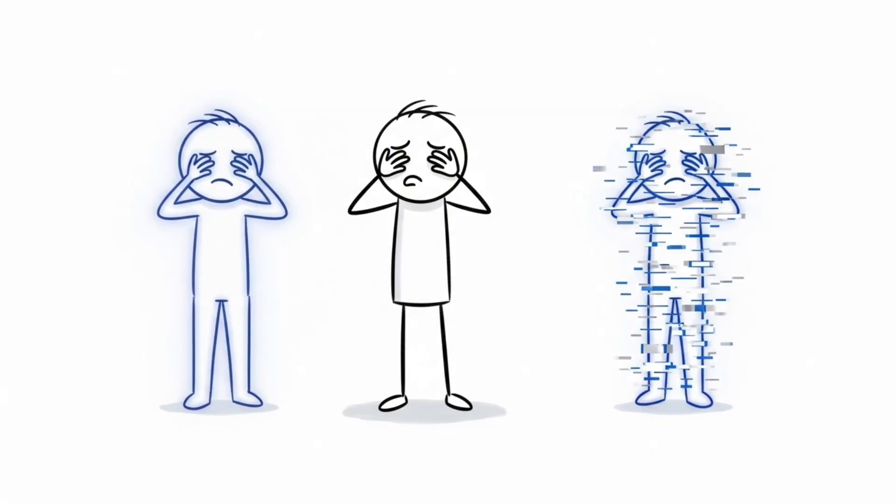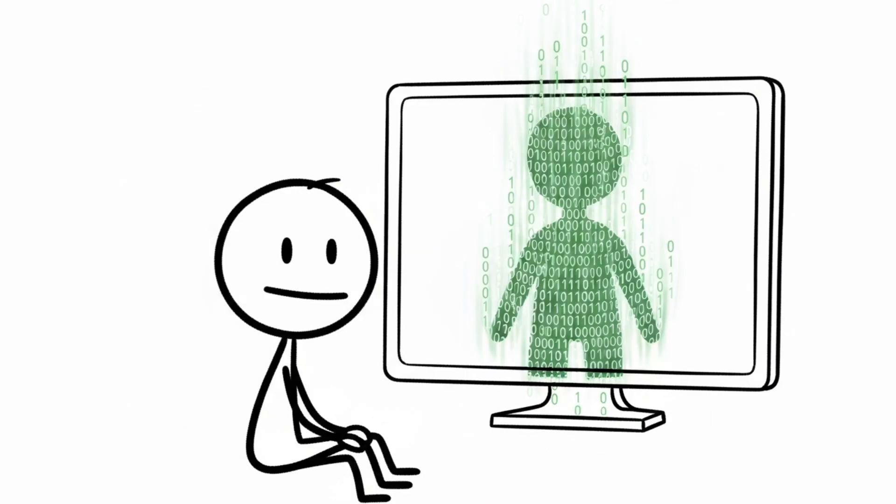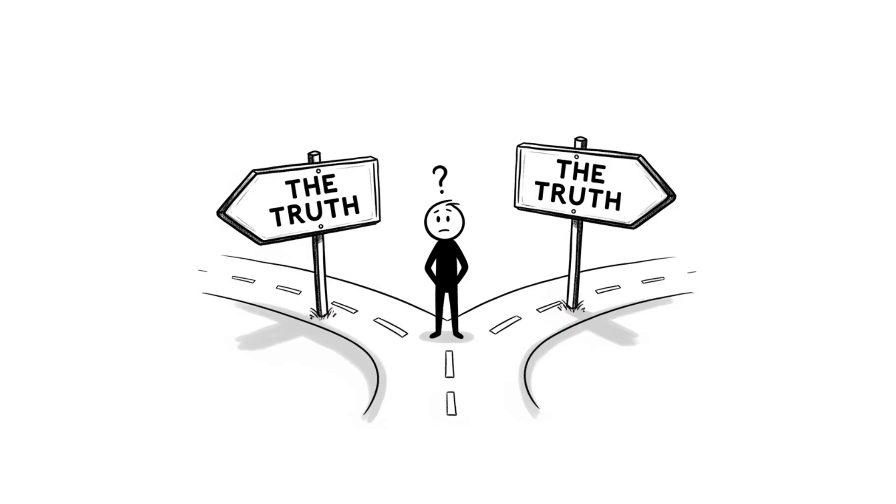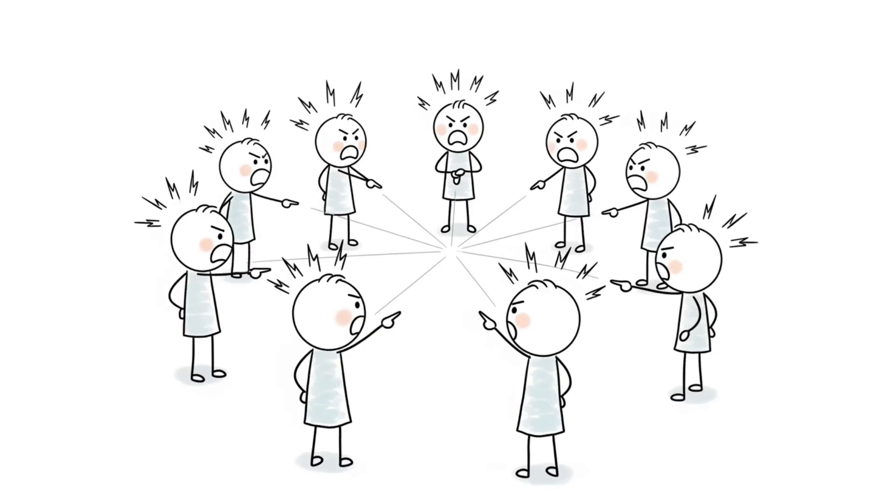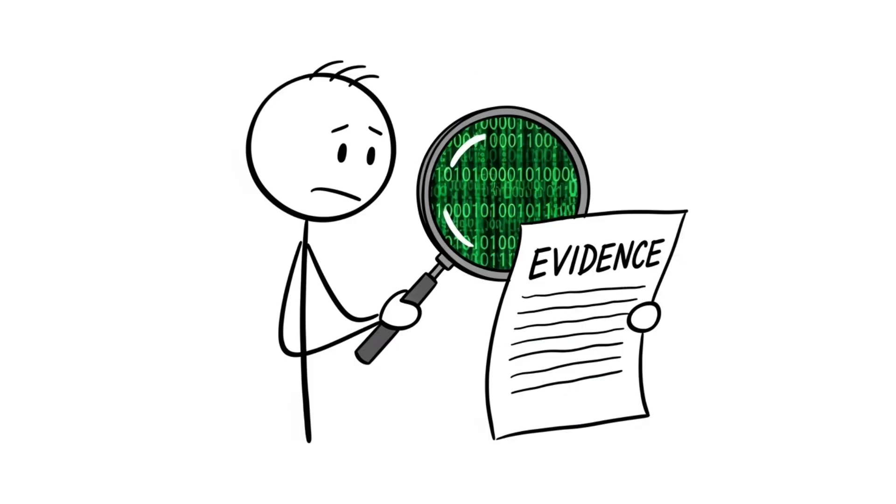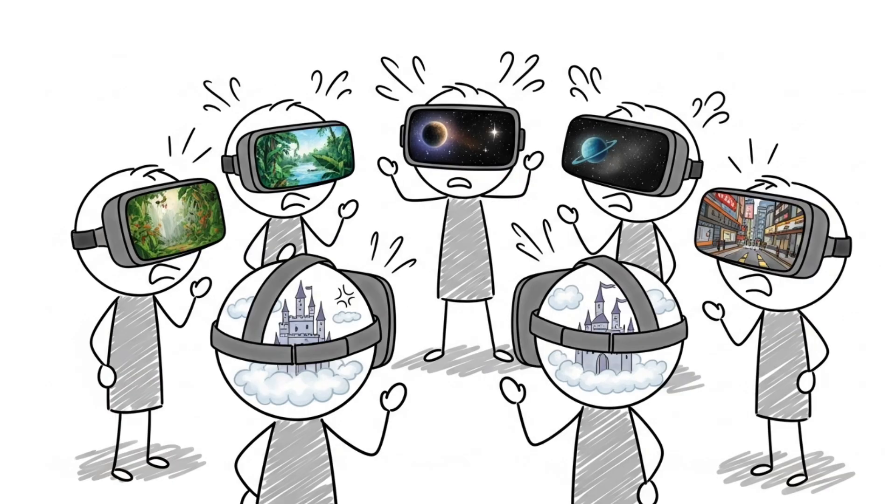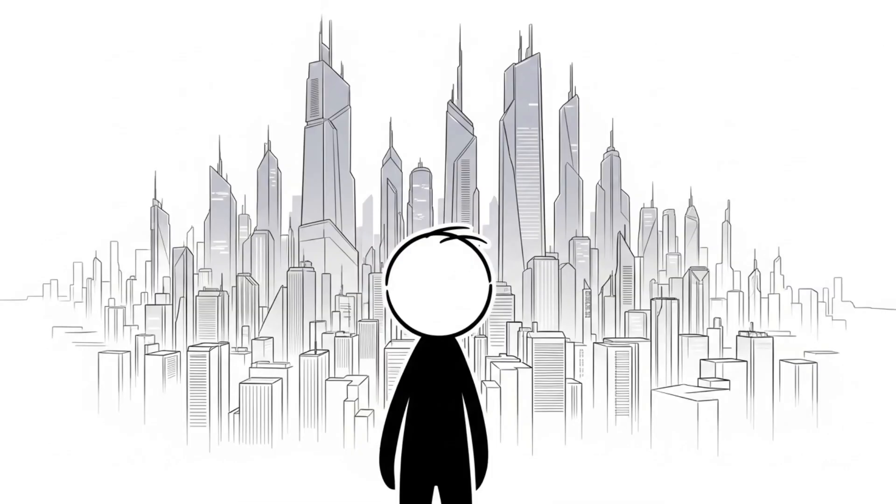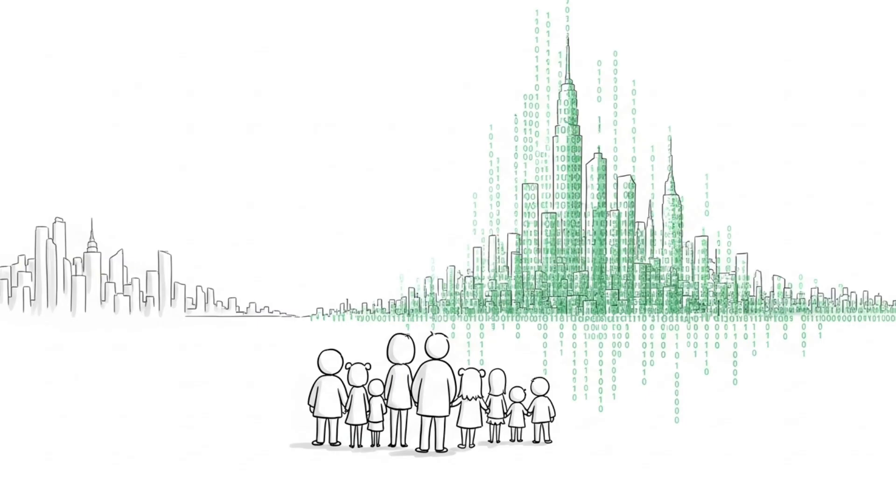When everything can be faked, people stop believing anything is real. Evidence disappears. Truth becomes a choice instead of a fact. Consensus becomes impossible. We're not just losing our ability to verify facts, we're losing our shared agreement on what constitutes reality itself. It's a terrifyingly dark world to live in where people blindly believe anything is true without due diligence.